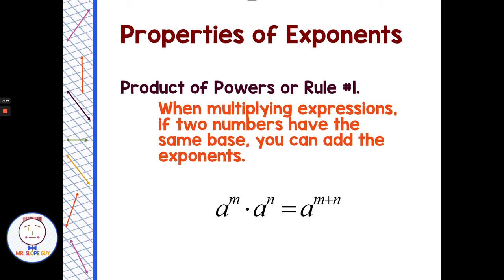One of our first rules for exponents is the Product of Powers Rule, or Rule Number One. When multiplying expressions, if the two numbers have the same base, we can add the exponents. So for example, if I have a to the m times a to the n, we're multiplying and have the same base, so I can write that as a to the m plus n.